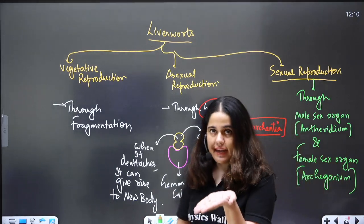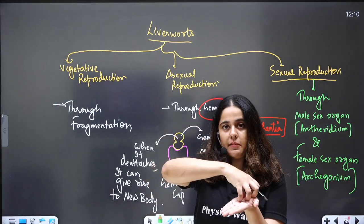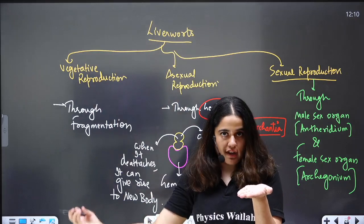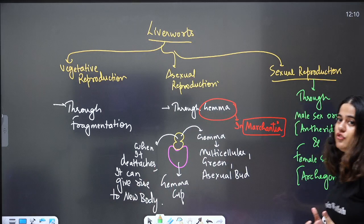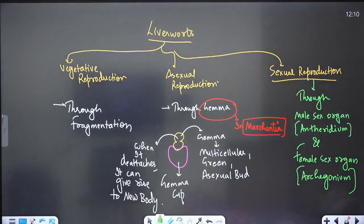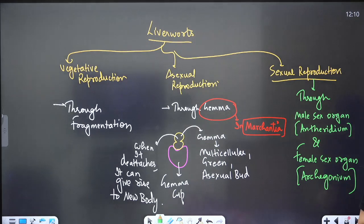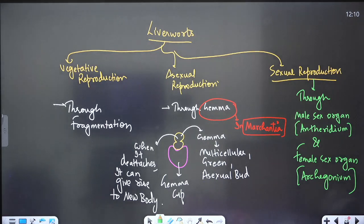Sexual reproduction occurs through the male sex organ, which is known as antheridium, and the female sex organ, which is known as archegonium. So vegetative reproduction is through fragmentation, asexual reproduction is through gemmae present in the gemma cup, and sexual reproduction is through antheridium and archegonium. Now I am going to explain the life cycle of liverworts.